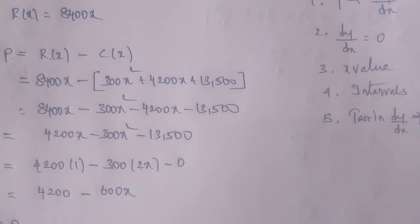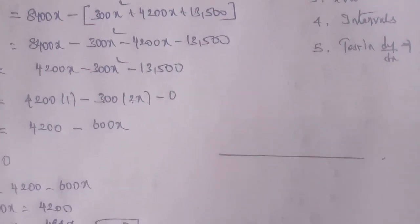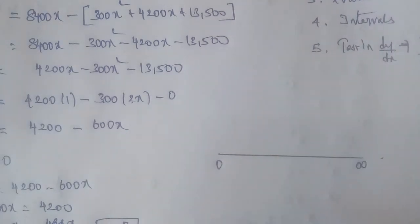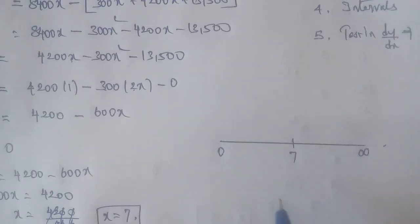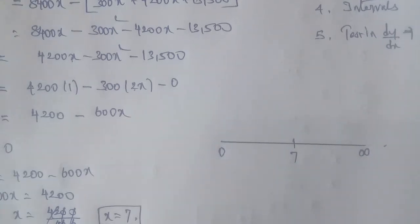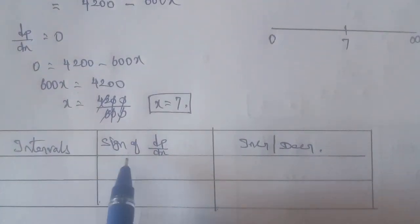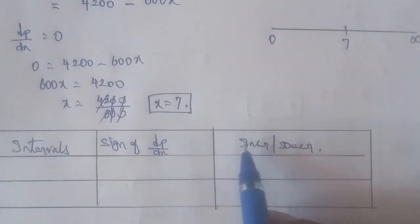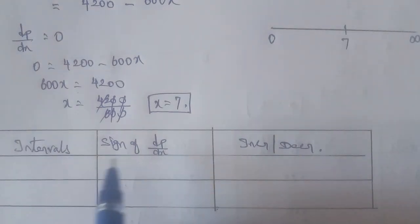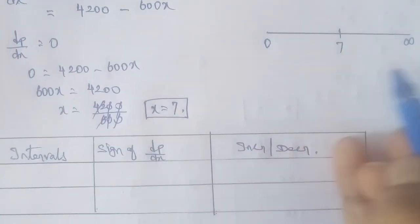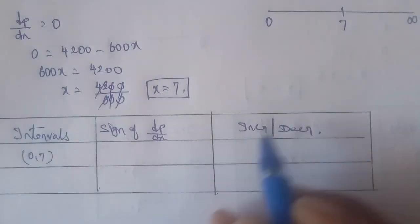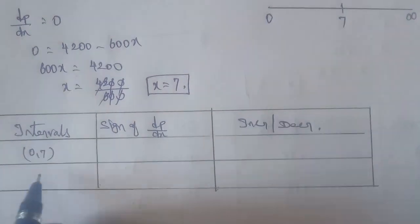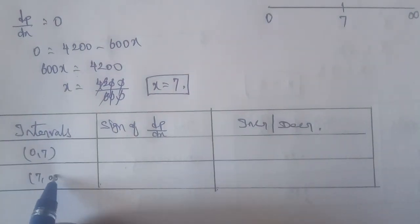We enter X equals 7 on the number line. This gives us the intervals: open interval (0, 7) and open interval (7, infinity). We check the sign of dP/dx in each interval to determine where the profit function is increasing or decreasing.